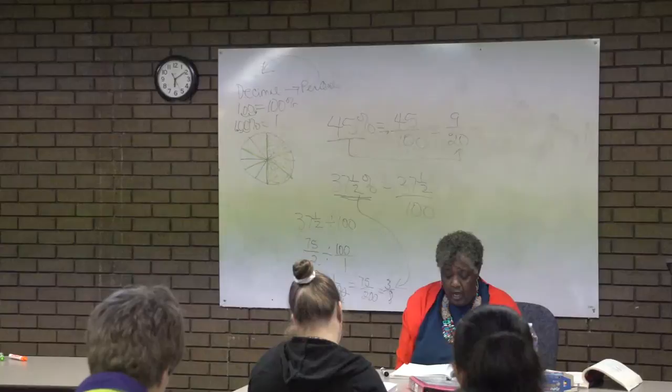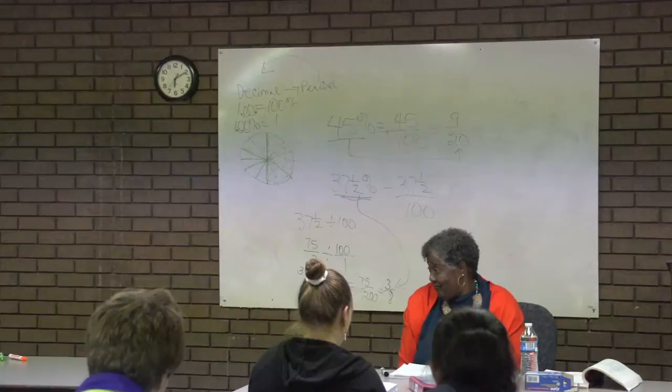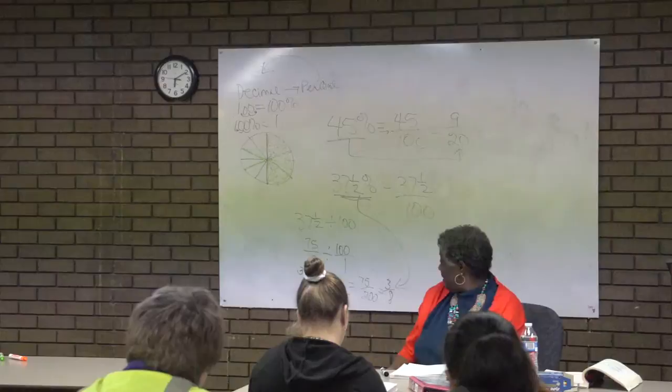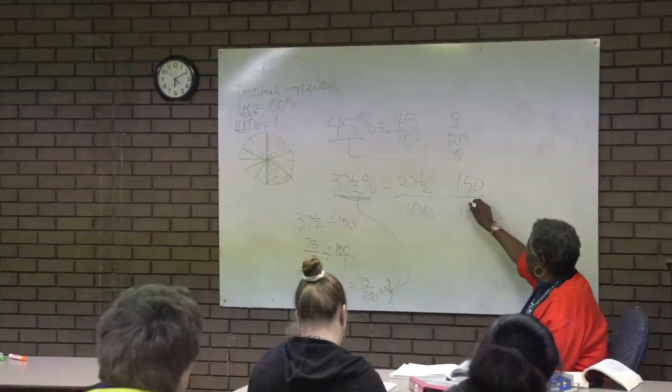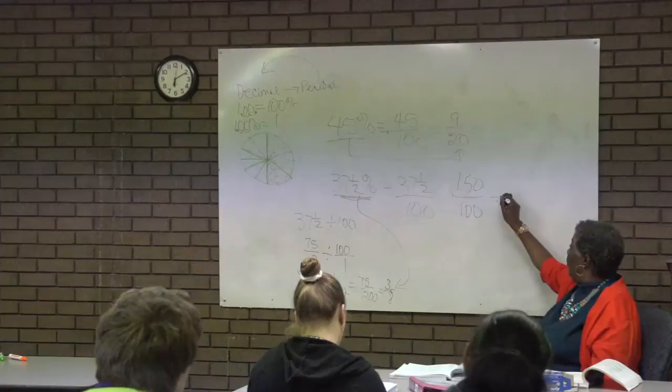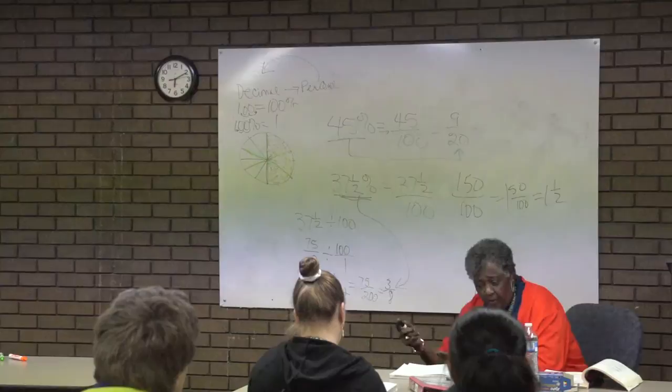But when you get to 150 percent, remember, if it's 150 percent and they're changing to a fraction, you know it's going to be one and something. It's one and a half, right? A hundred percent is one whole, fifty percent is a half, so that's one and a half. Now, if you want to change it, you're going to put 150 over a hundred. It's all over a hundred, doesn't matter if it's bigger than a hundred or smaller than a hundred. The rule is divided by a hundred. A hundred would go in 150 how many times? One with how many left over? It's going to be more than one whole because you had more than a hundred percent.